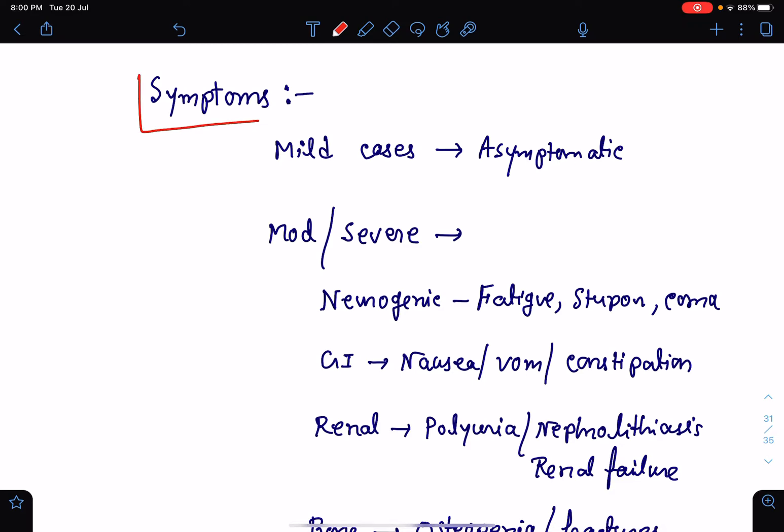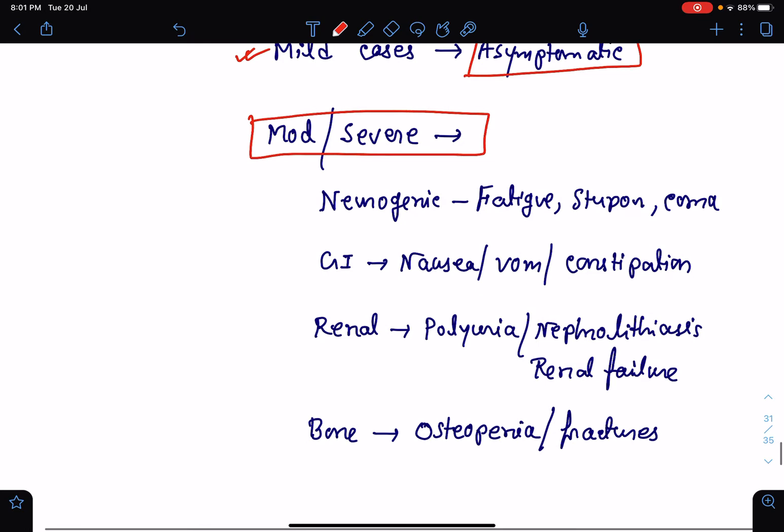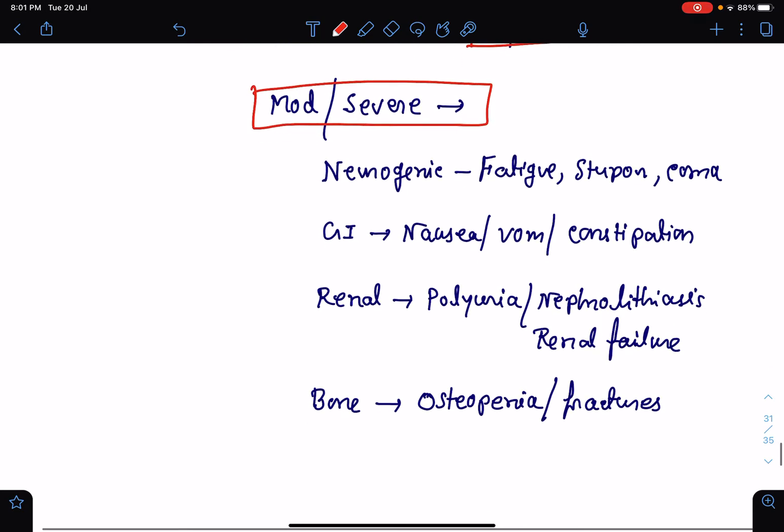If you talk about the symptoms of hypercalcemia, mild cases go unnoticed. They are usually asymptomatic. But moderate to severe cases result in symptoms. Symptoms may be neurogenic or may be related to GI, renal symptoms or symptoms due to osteopenia.